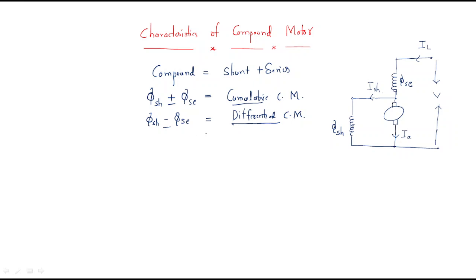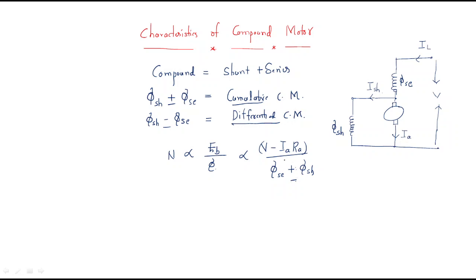The characteristics of the motor means the characteristics of speed and torque. Speed is given by Eb divided by flux. The flux field depends on two cases: sometimes the series flux and shunt flux will be added, and sometimes they will differ. So the total flux can be either cumulative or differential.